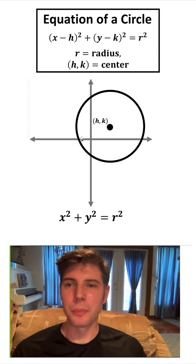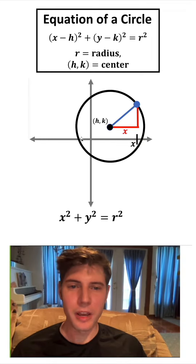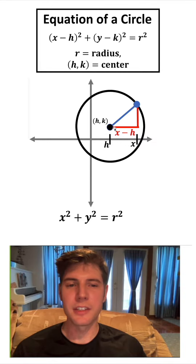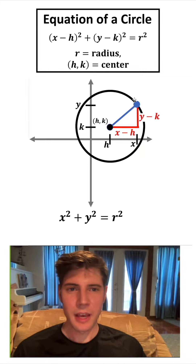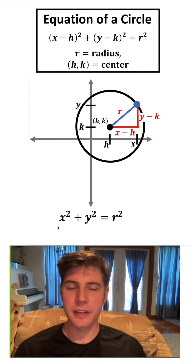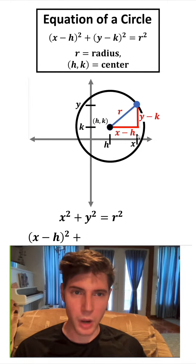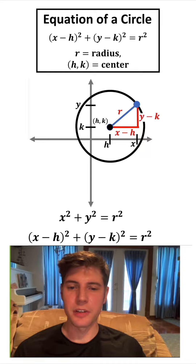Let's bring back our triangle. This side on the bottom is no longer just x — x goes all the way from here, but this point here is h. So this side is the distance between x and h, which we'll call x minus h. And this point up here is our y, while this point down here is k, so the length of this side is y minus k. The radius is still r. We can update our equation: the first piece changes from x to x minus h squared, plus y minus k squared, equals r squared. This is our equation of a circle, and this is how it's derived.